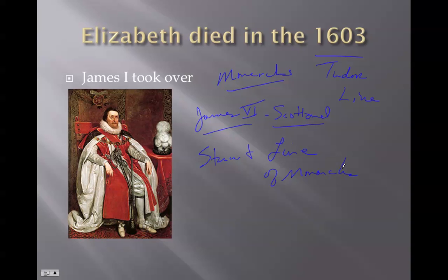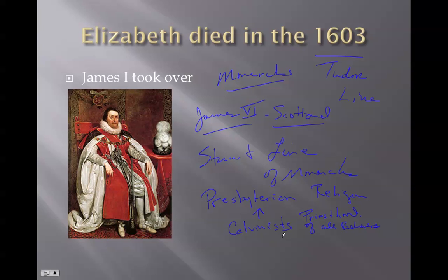One of the things James I did was really persecute the religion of the Scots — he hated the Presbyterian religion. The Presbyterians were Calvinist and believed strongly in the doctrine of the priesthood of all believers. This was a recognition that if you choose your religious leaders, then you can choose your political leaders as well.